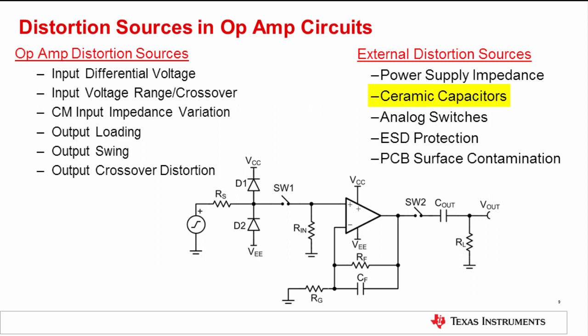Ceramic capacitors, specifically Y5V, X7R, or other high-K dielectric types will produce distortion. Analog switches and multiplexers in the signal path can contribute distortion as well as ESD protection diodes. Finally, PCB surface contamination, specifically between the amplifier inputs, can also contribute distortion.